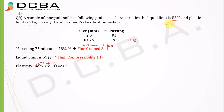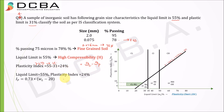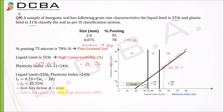The plasticity index is calculated as liquid limit minus plastic limit: 55 − 31 = 24%. For the A-line equation at a liquid limit of 55, the value comes out to 25.55%. Since our plasticity index of 24% is less than 25.55%, the soil lies below the A-line. Therefore, the soil is inorganic silt with high plasticity, classified as MH.